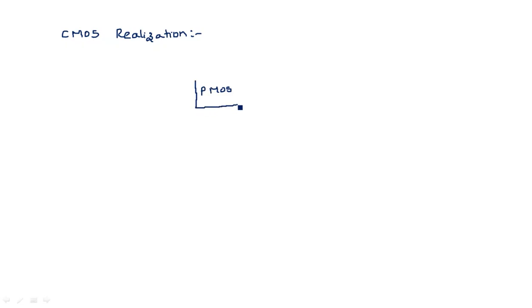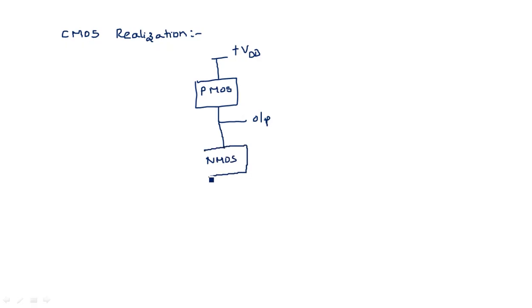In CMOS realization, the PMOS circuit handles whatever logic we are implementing, placed in between VDD and the output. The NMOS realization is placed in between the output and ground, also called VSS.